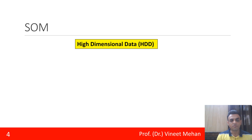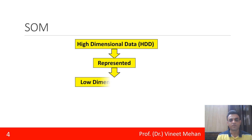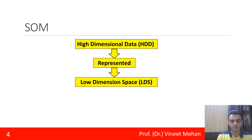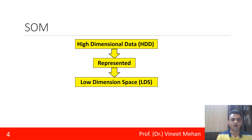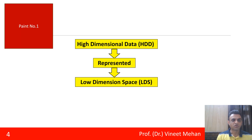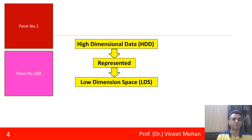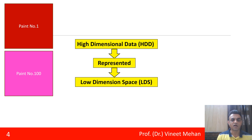What SOM does is it represents high-dimensional data in a low-dimensional space. To understand this, let's take an example where we consider that we had gone to a hardware or paint shop and asked for a certain paint to paint our house. The shopkeeper shows us a number of paints — paint number one in red color, similarly paint number two, three, four, and up to paint number 100. This kind of representation where we can see the paints in full-page form is called high-dimensional data.